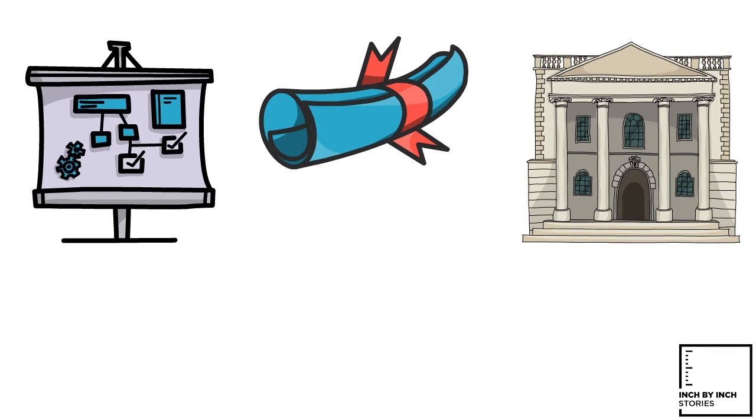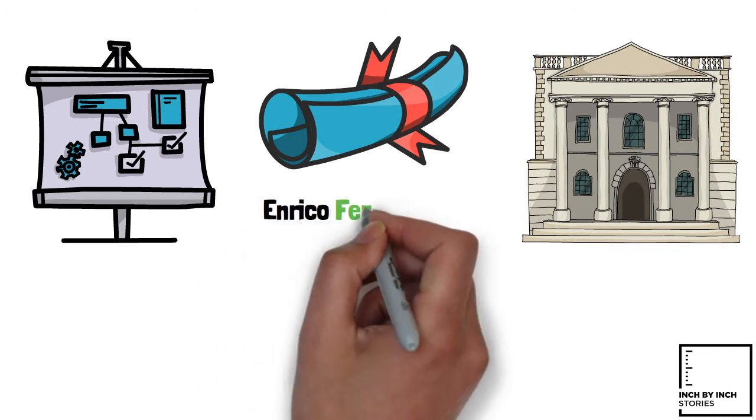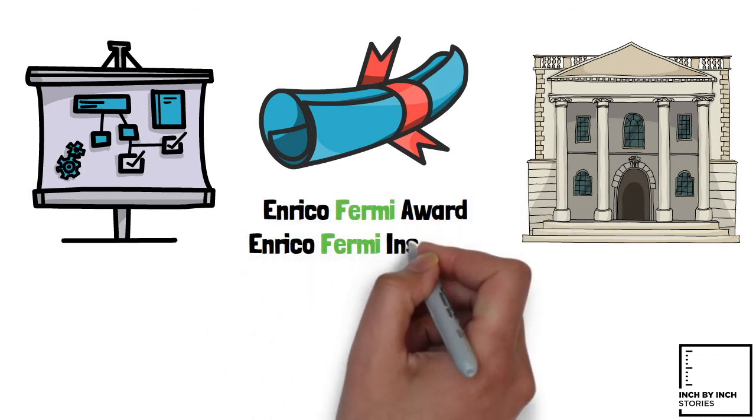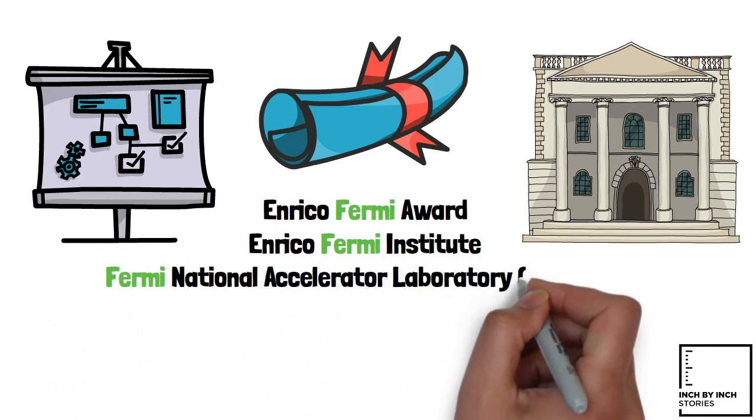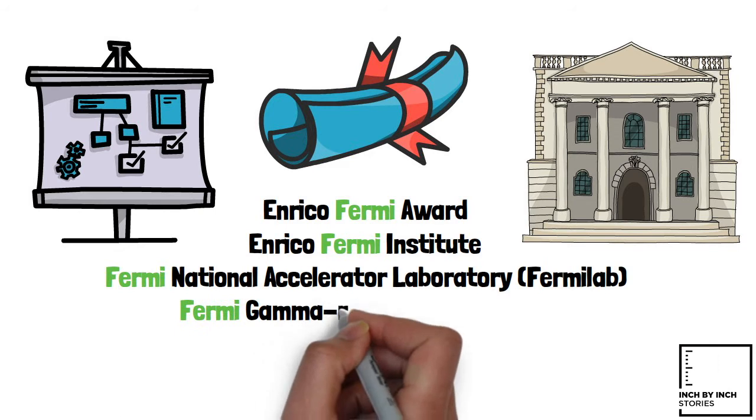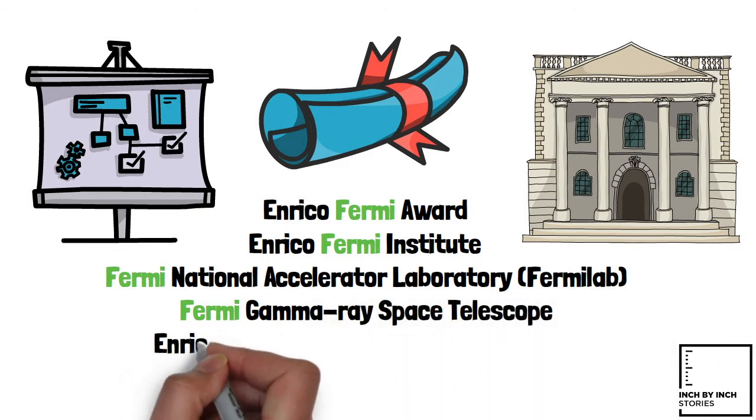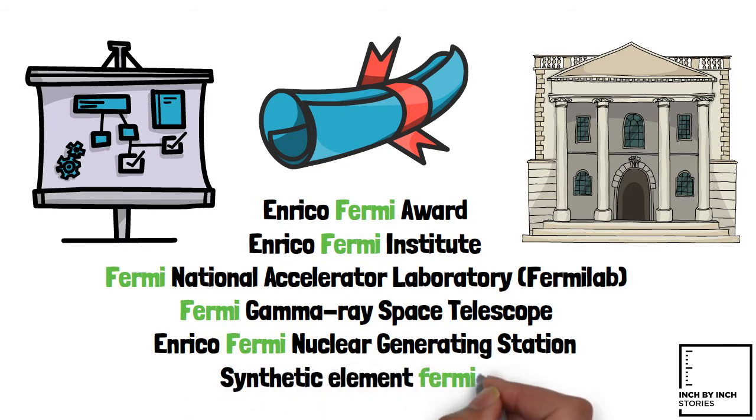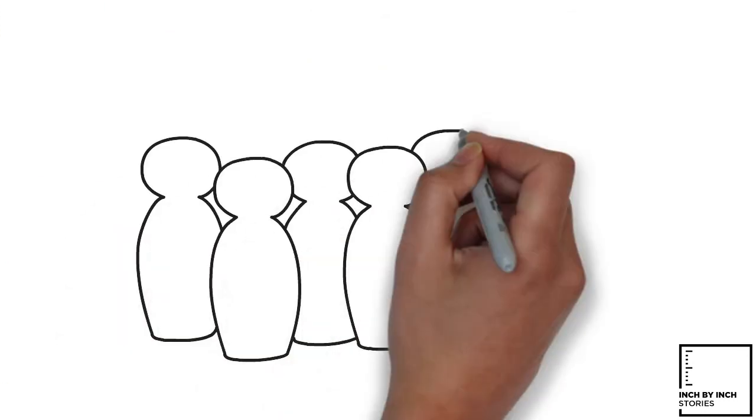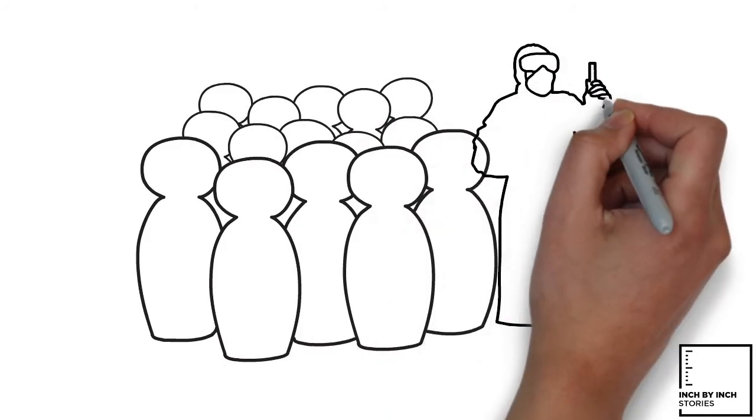Many awards, concepts, and institutions are named after Fermi, including the Enrico Fermi Award, the Enrico Fermi Institute, the Fermi National Accelerator Laboratory or Fermilab, the Fermi Gamma Ray Space Telescope, the Enrico Fermi Nuclear Generating Station, and the synthetic element Ferminium, making him one of the 16 scientists who have elements named after them.